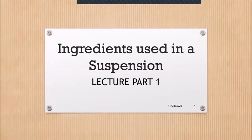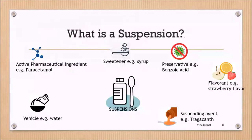We are going to look at ingredients used in a suspension. First, we have to determine what a suspension is. A suspension is a heterogeneous dosage form — heterogeneous meaning it differs from a solution in that you have finely divided powders suspended in a vehicle. The powders are not soluble; usually insoluble ingredients are used to form a suspension. More often than not, the insoluble ingredient tends to be the active pharmaceutical ingredient — the ingredient that will confer a pharmacological response — and therefore it has to be formulated in a specific way.